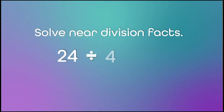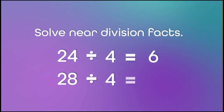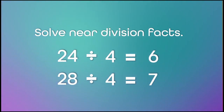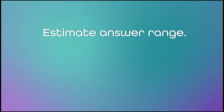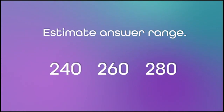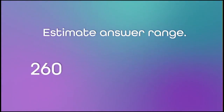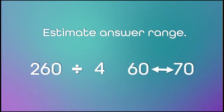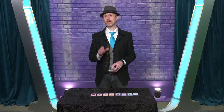Now we use 4 as a divisor and solve those familiar near division facts. 24 divided by 4 equals 6, and 28 divided by 4 equals 7. Remember though, we're actually dealing with 24 tens and 28 tens, so the answers are really 60 and 70. With those two numbers, we can estimate the answer range of the original division problem. Since 260 is between 240 and 280, our answer for 260 divided by 4 should be between 60 and 70.